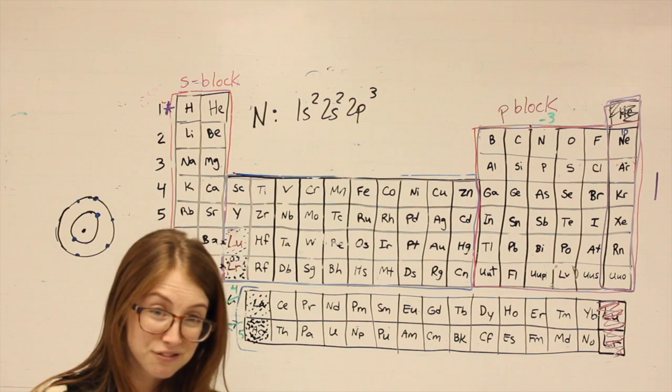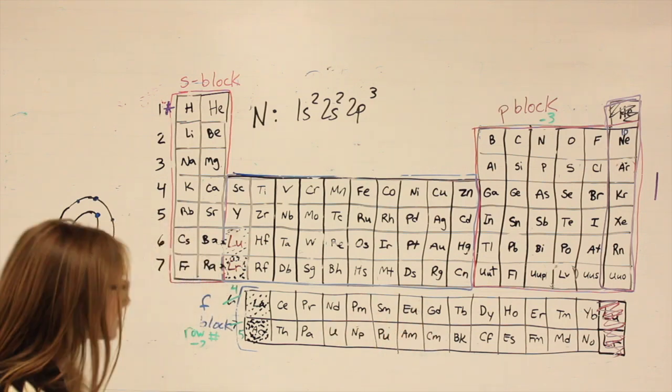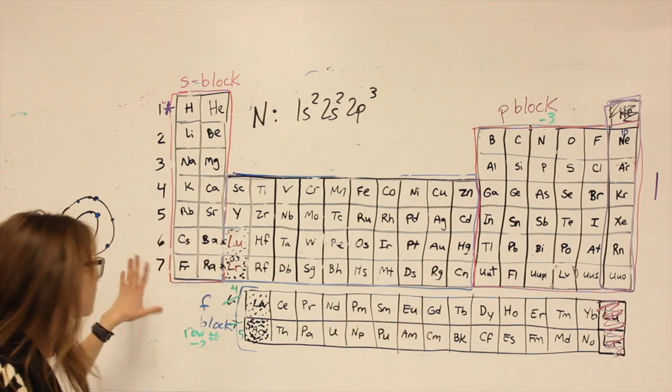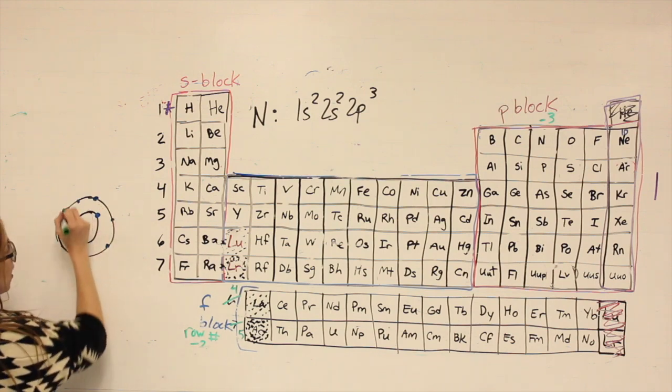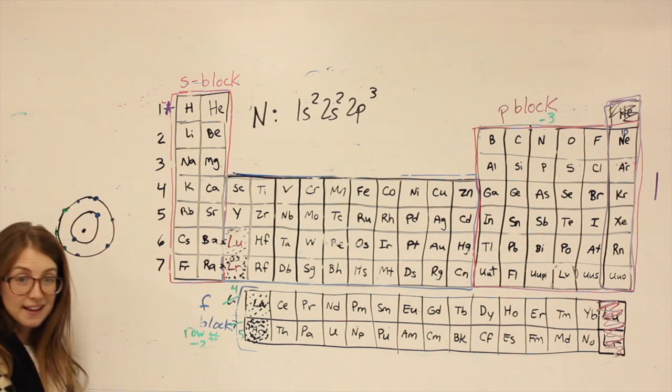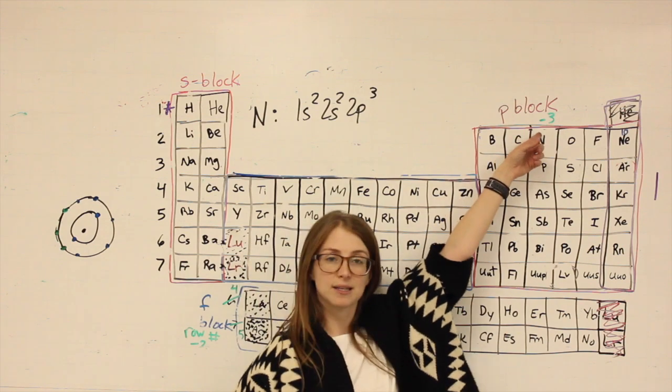Since electrons are negative, gaining more electrons makes the atom more negative. To become full, nitrogen needs to gain one, two, three electrons. That's why it's a minus three charge.